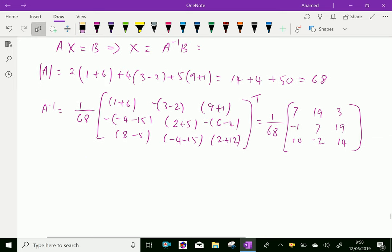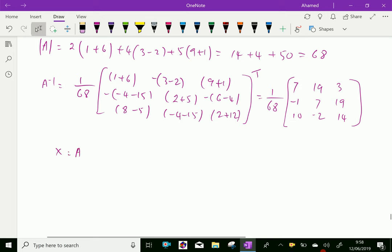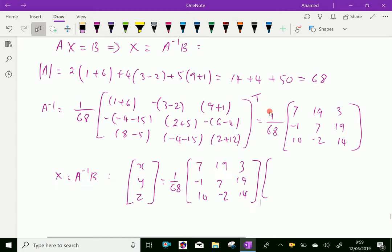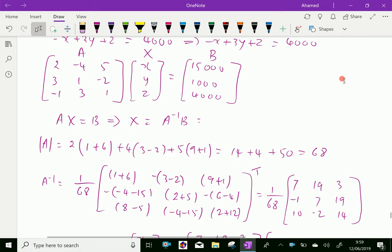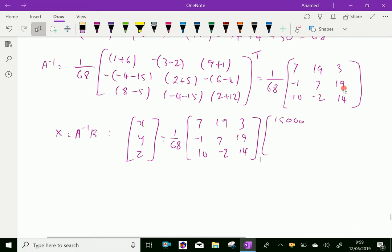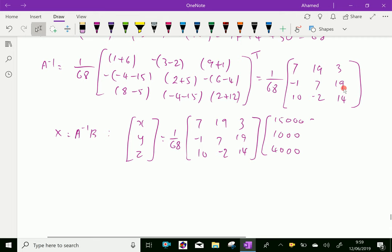Now, regarding the equation, we have X equal A inverse B. Therefore, X, Y, Z and A inverse is here. We have to write 1 over 68. A inverse is 7, 19, 3; -1, 7, 19; and 10, -2, 14. And that B, the B matrix is, amount matrix, 15,000, 1,000, and 4,000. Now, we'll do the multiplication of these things.